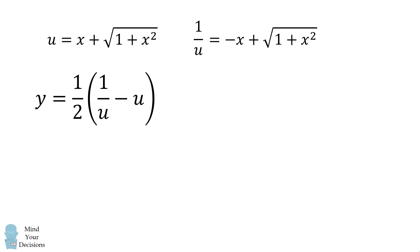We can then substitute that in for what we've solved for y. We then take 1 over u minus u and then we simplify this. Notice that the radical terms will cancel out and we are left with just negative 2x. Thus, y is equal to negative x.